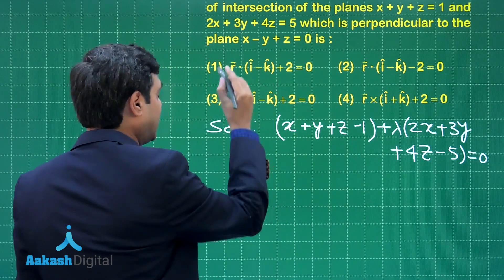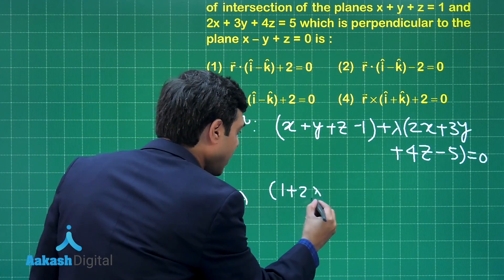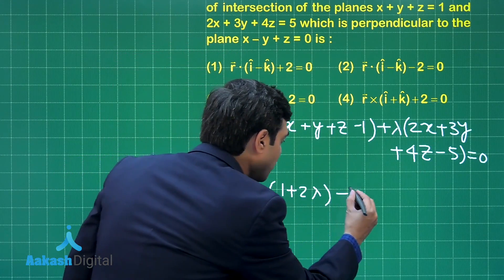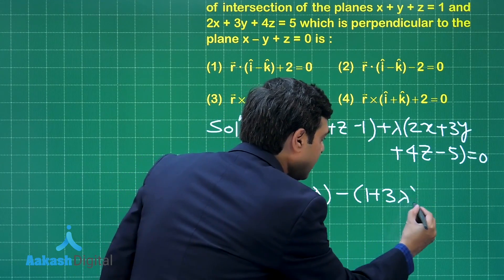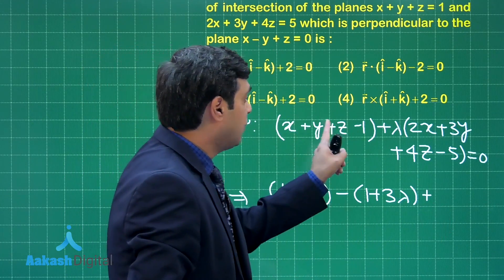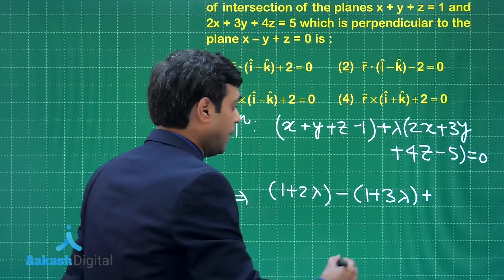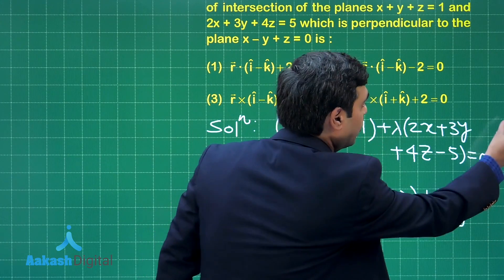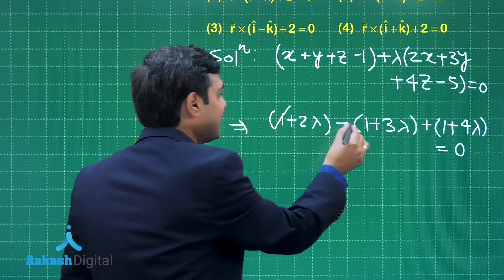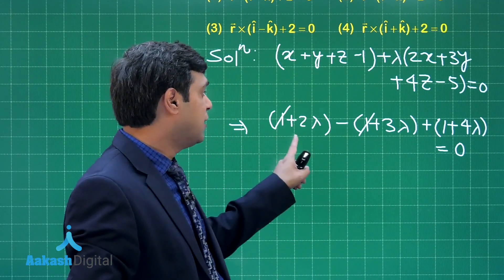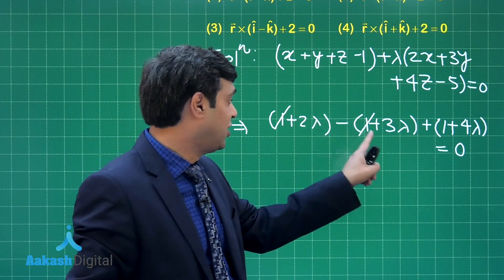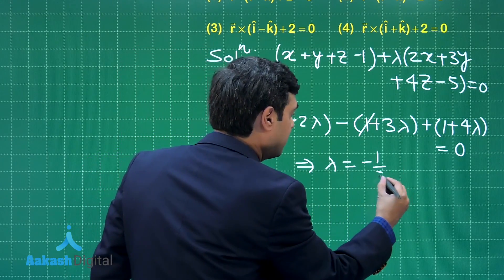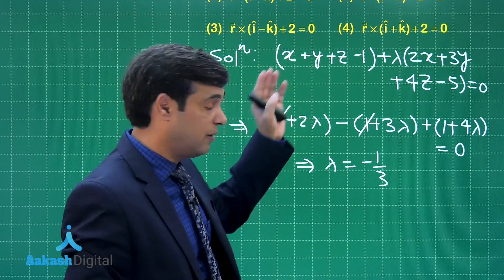That gives us: (1 plus 2lambda) multiplied by 1, minus (1 plus 3lambda) multiplied by 1, plus (1 plus 4lambda) multiplied by 1, equals 0. Simplifying, the 1s cancel and we are left with 2 plus 4 giving 6lambda minus 3lambda, that is 3lambda plus 1, giving the value of lambda as minus 1 by 3.